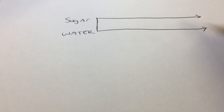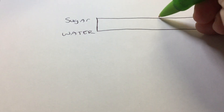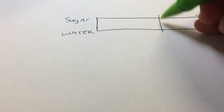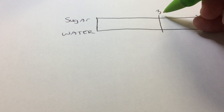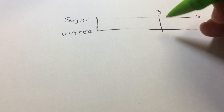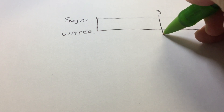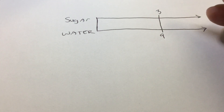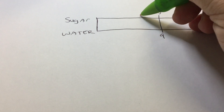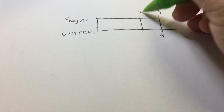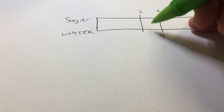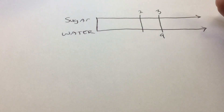They give us three cups of sugar, so I'm going to draw a line and put three on top for the three cups of sugar. We need three cups of sugar for every nine cups of water, so I'm going to put nine on the bottom. Now they're asking us: if I have two cups of sugar, which is smaller than three, I'm going to put a line over here — two cups of sugar — how many cups of water will I need?